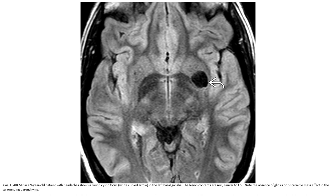T2 image in a nine-year-old patient shows around 60 cysts in the left basal ganglia. Note the absence of gliosis or surrounding white matter signal abnormality in the surrounding parenchyma, which favors a diagnosis of perivascular spaces.